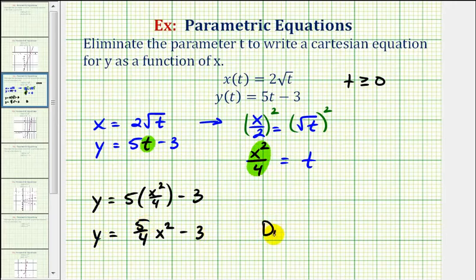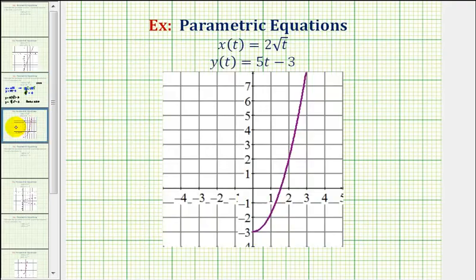For the Cartesian equation, we should state the domain will be when x is greater than or equal to zero. So if we were to graph this, it's actually only going to be half a parabola, as we see here. This is the graph of y equals five fourths x squared minus three, where the domain is x is greater than or equal to zero.